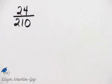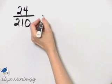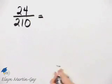So to see if there are any common factors, let's write the prime factorization of each number. In other words, let's write each number as a product of primes.